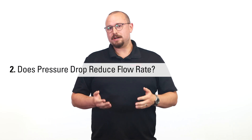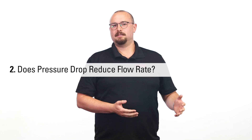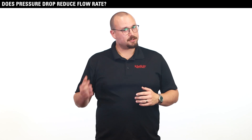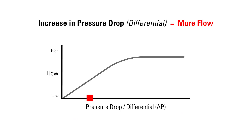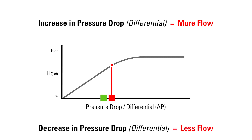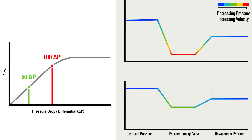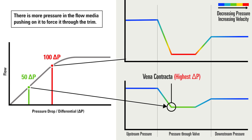Our second question is: does pressure drop reduce flow rate? Pressure drop does affect flow rate, but does not always reduce it. An increase in pressure drop or differential equals more flow; a decrease in pressure drop or differential equals less flow. For example, a valve would be able to flow more with a 100-pound drop than if it had a 50-pound pressure drop. This is because there's more pressure in the flow media pushing on it to force it through the trim.